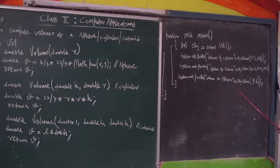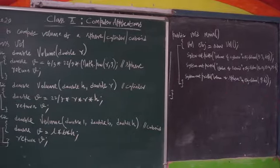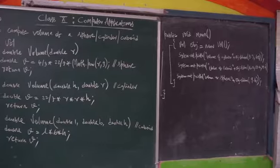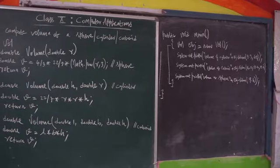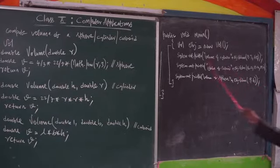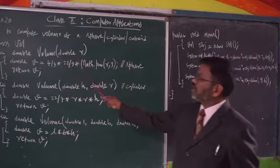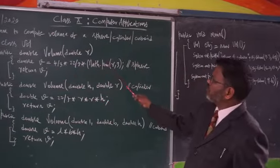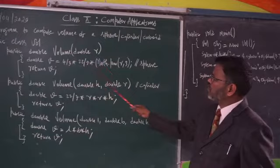Then the last statement of the main method: system.out.println volume of a sphere. You have only one argument which is 9.6. From main method, the control goes to the method called volume with one parameter.